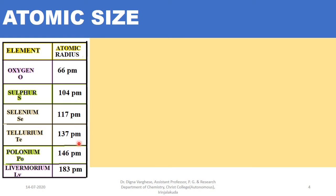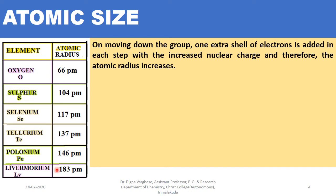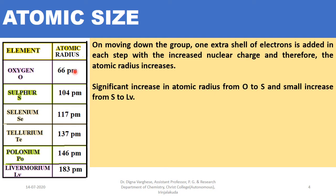For tellurium, the atomic radius is 137 pm; for polonium, 146 pm; and for livermoreum, 183 pm. On moving down the group from oxygen to livermoreum, one extra shell of electrons is added in each step with increased nuclear charge, and therefore the atomic radius increases. There is a significant increase from oxygen to sulfur, but only a small difference from sulfur to livermoreum.